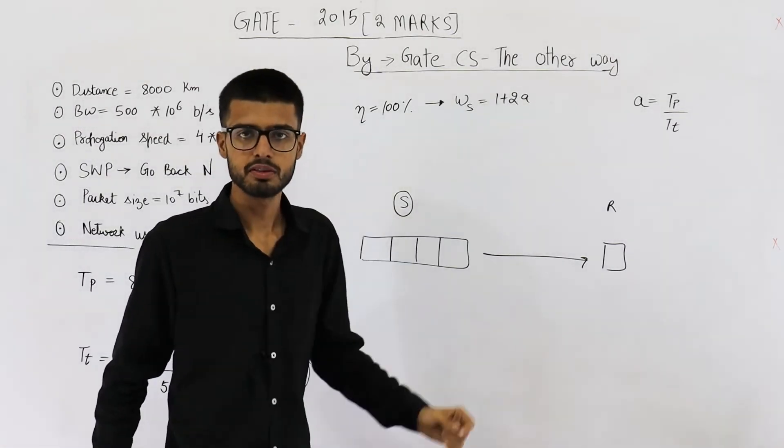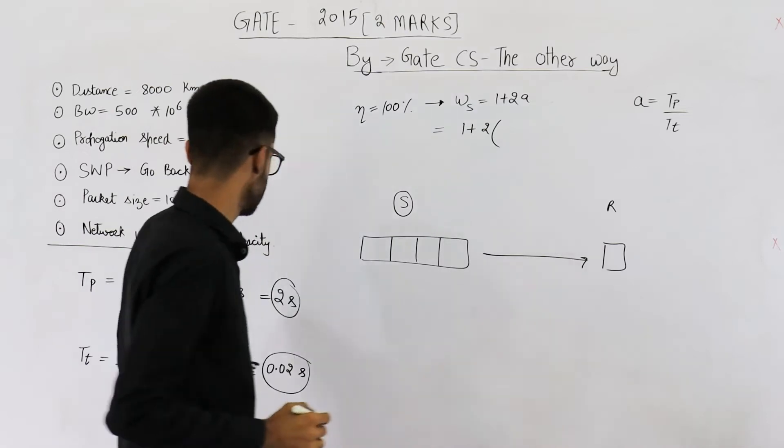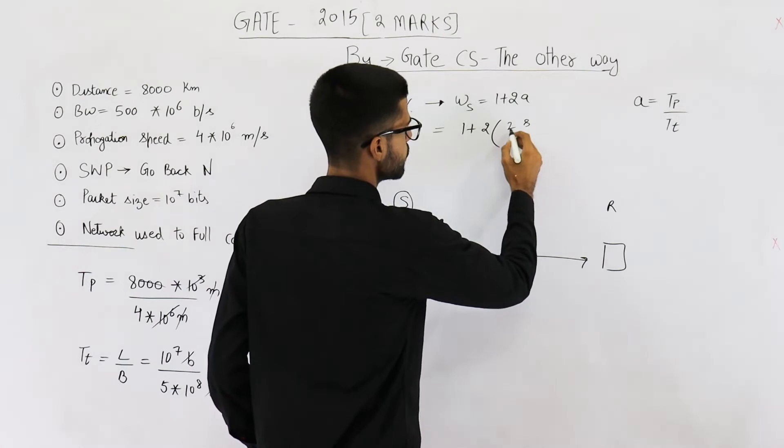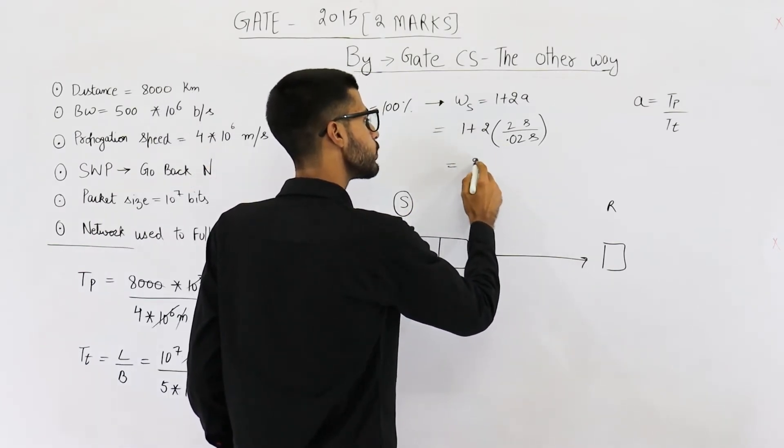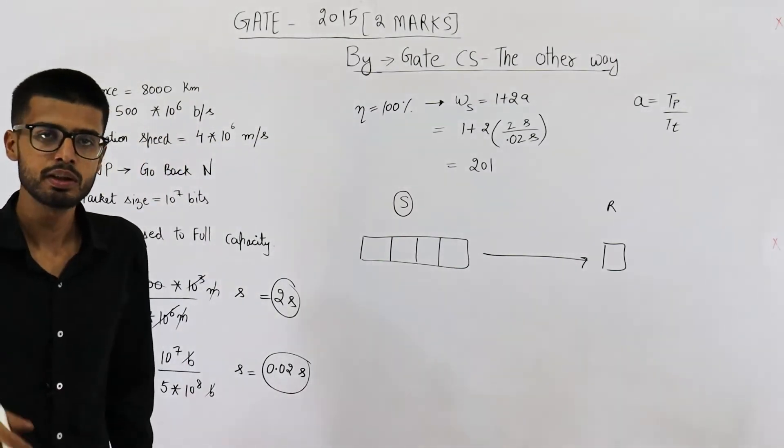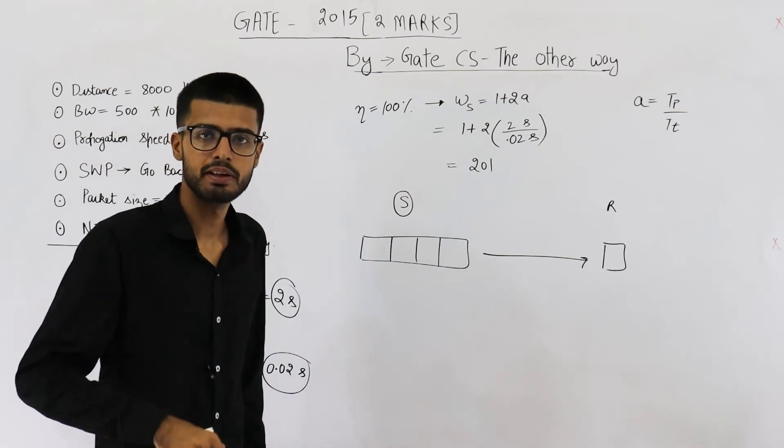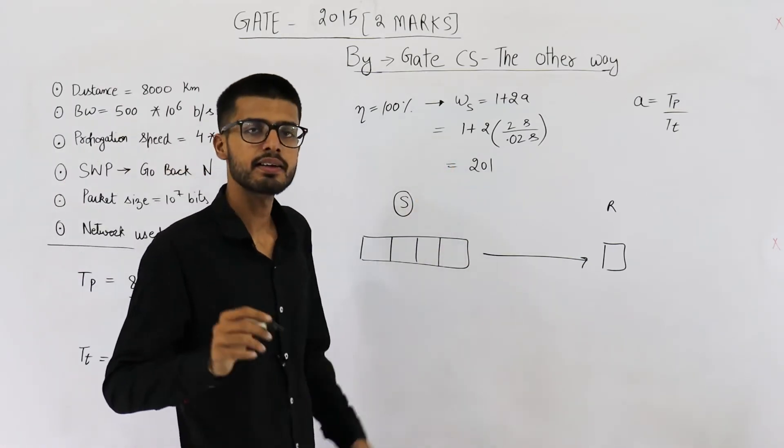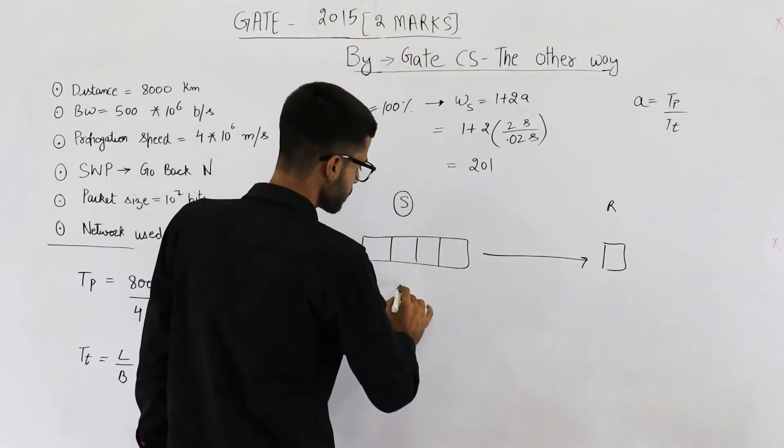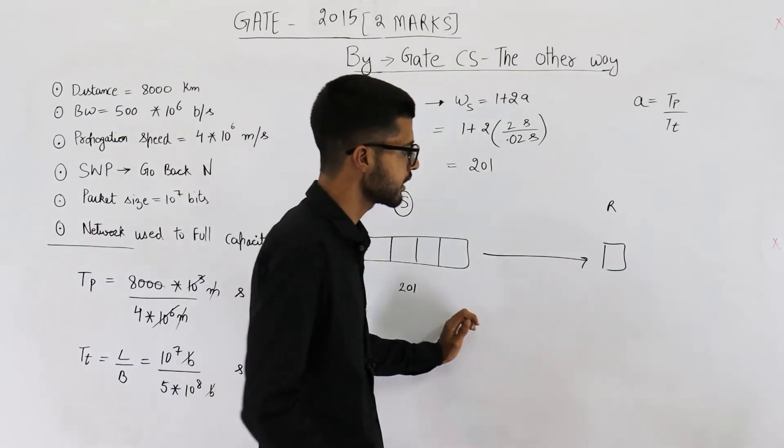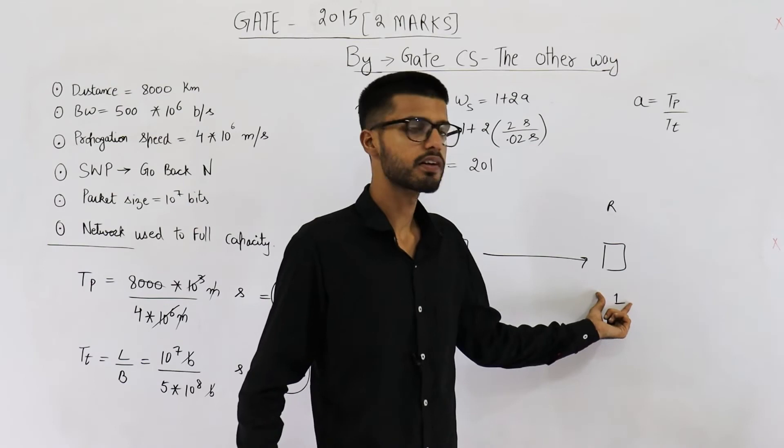Tp and Tt have been found out. We can now simply determine the value of 1 plus 2a. 1 plus 2a will be 1 plus 2 into 2 upon 0.02, 2 seconds divided by 0.02 seconds. This will be 100, and this value comes out to be 200 plus 1 which is 201. That means the algorithm that we need to implement must be go back 201. Even if one packet is lost, all of these 201 packets will be retransmitted. If window size at sender is of the size 201 packets, in that case we will have 100% efficiency. That means this must be 201. Receiver size is 1, window size of receiver.